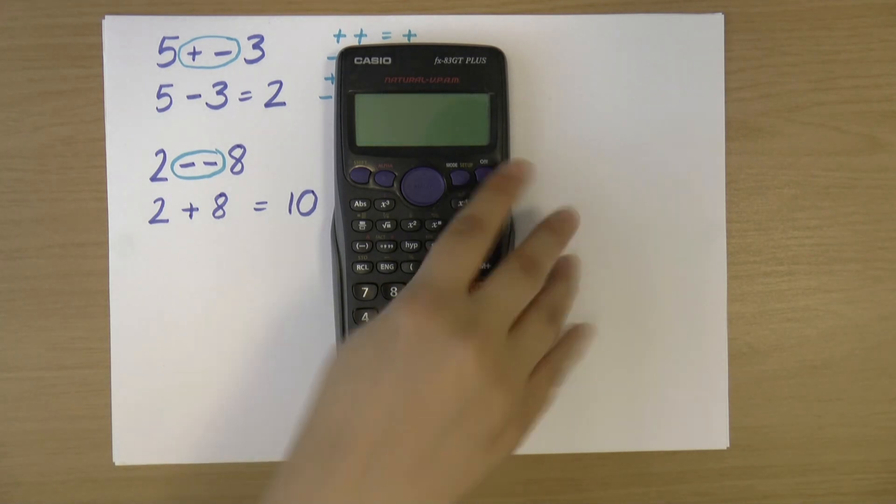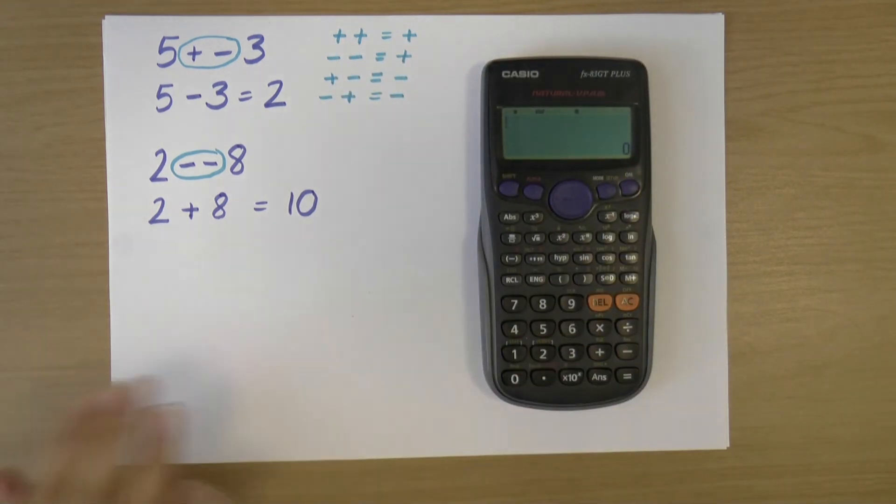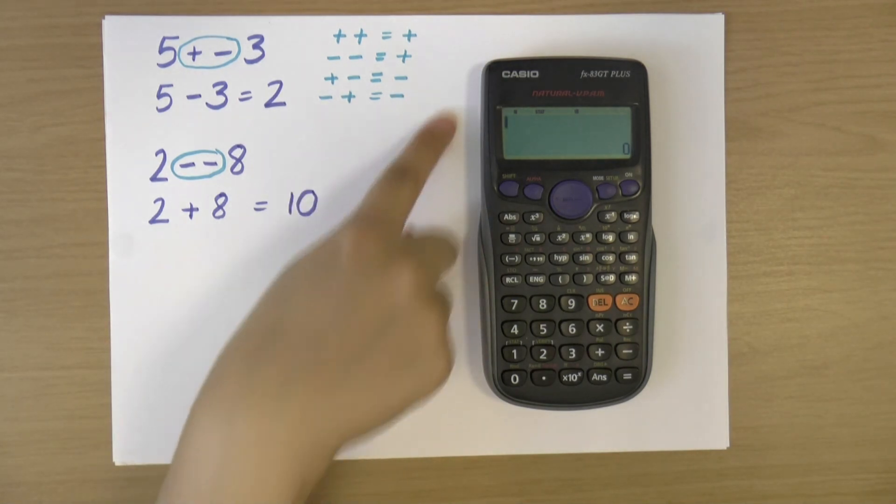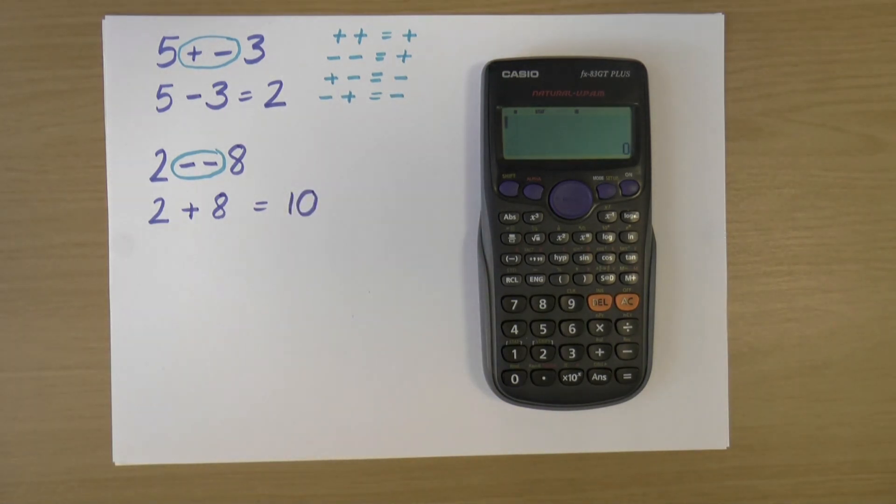Okay, so if we have been asked to plus or minus negative numbers or a mix of negative and positive numbers, then we just follow these four rules here in order to do so.